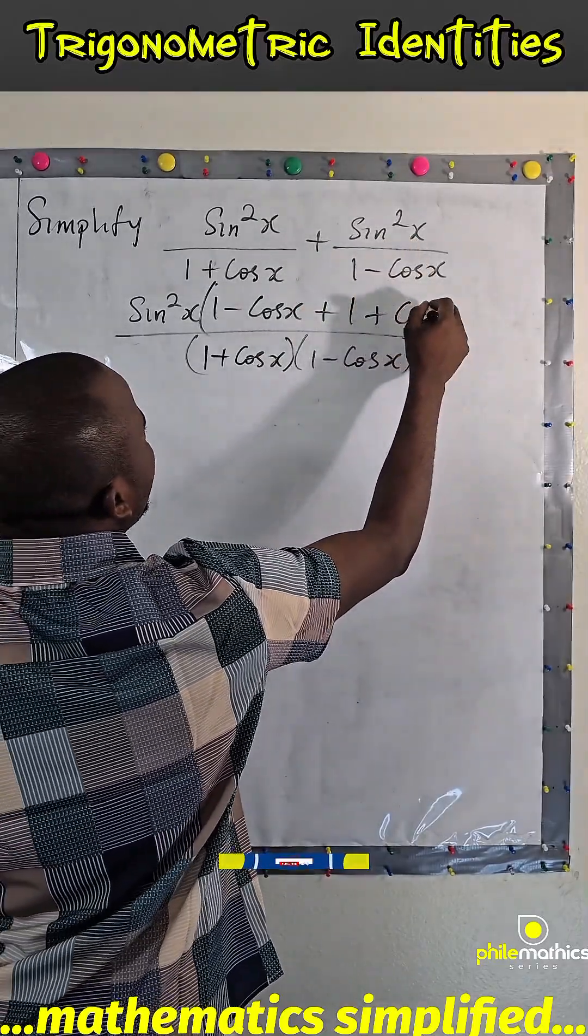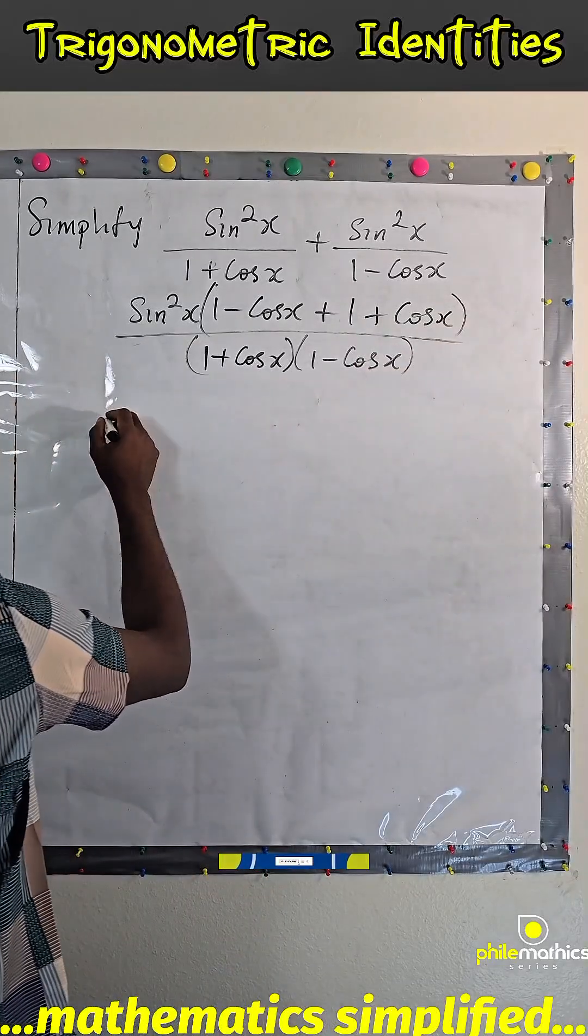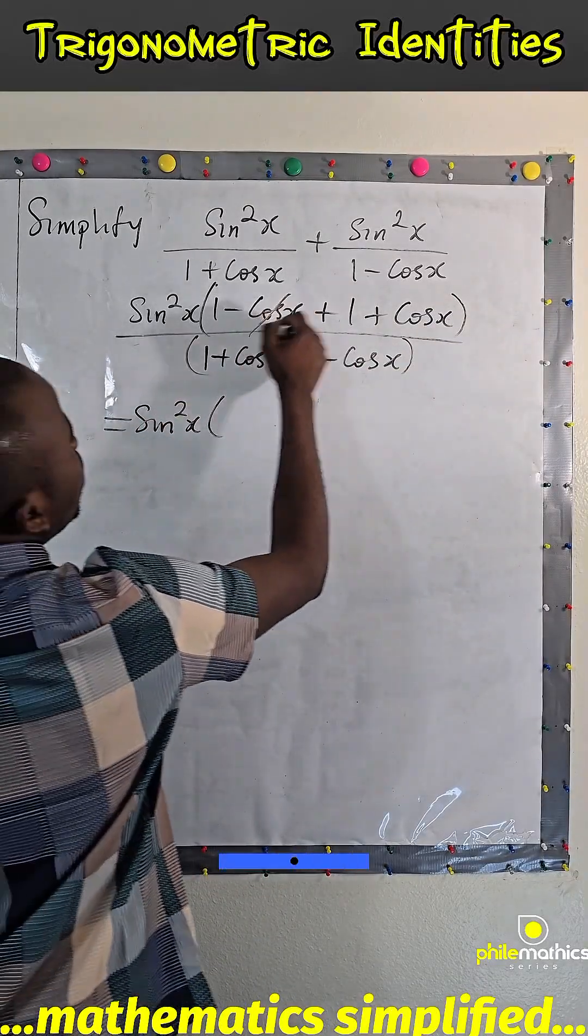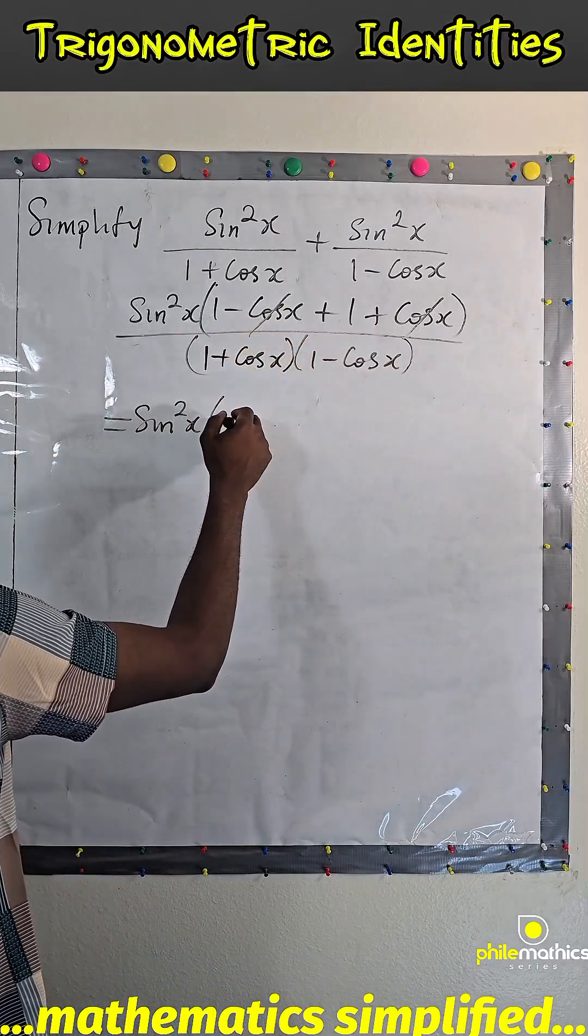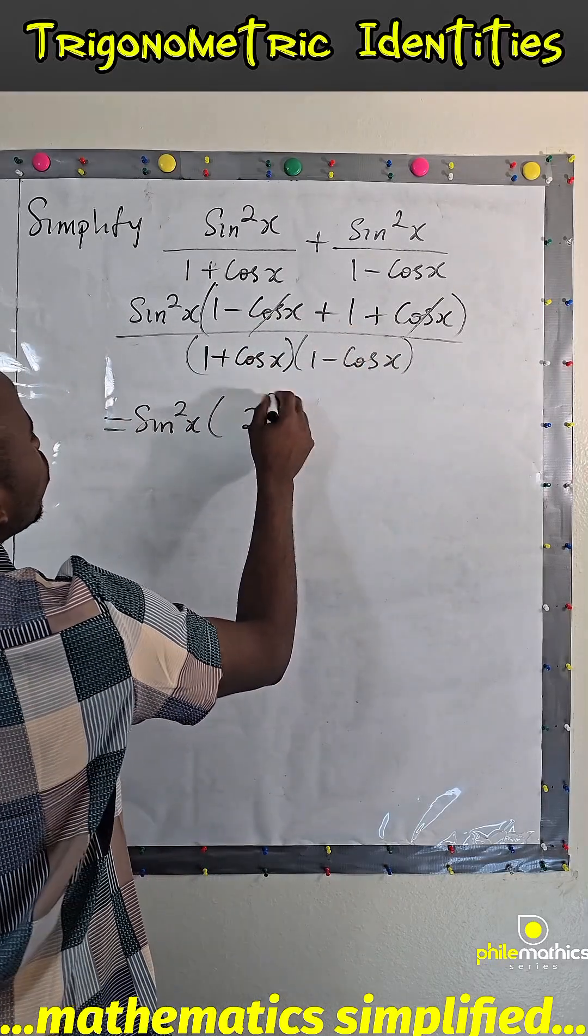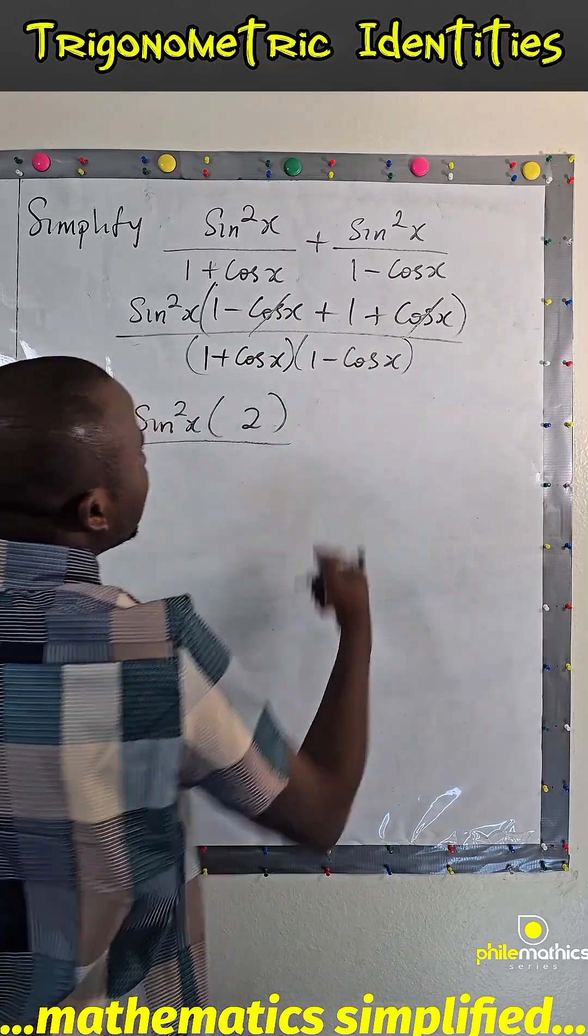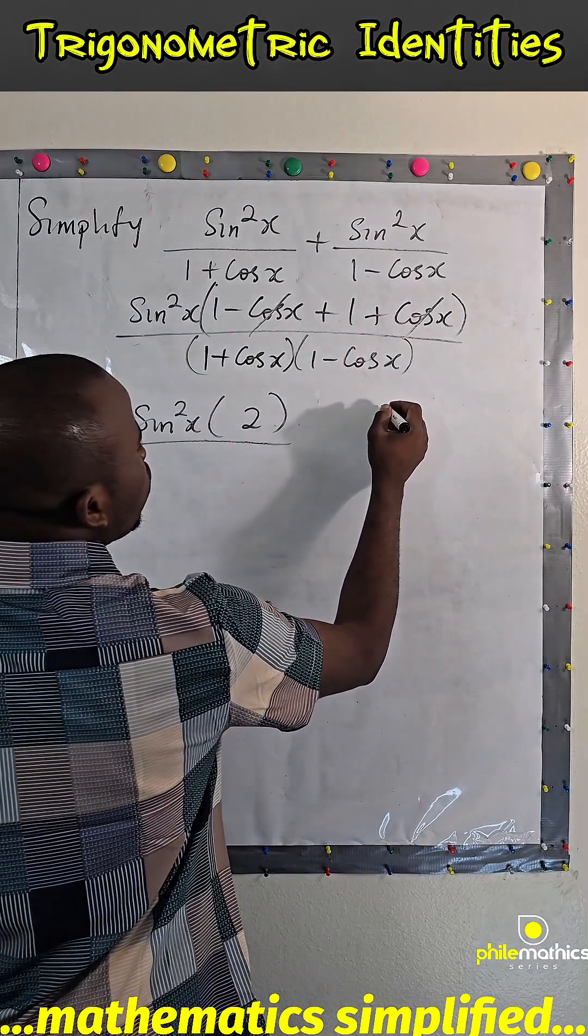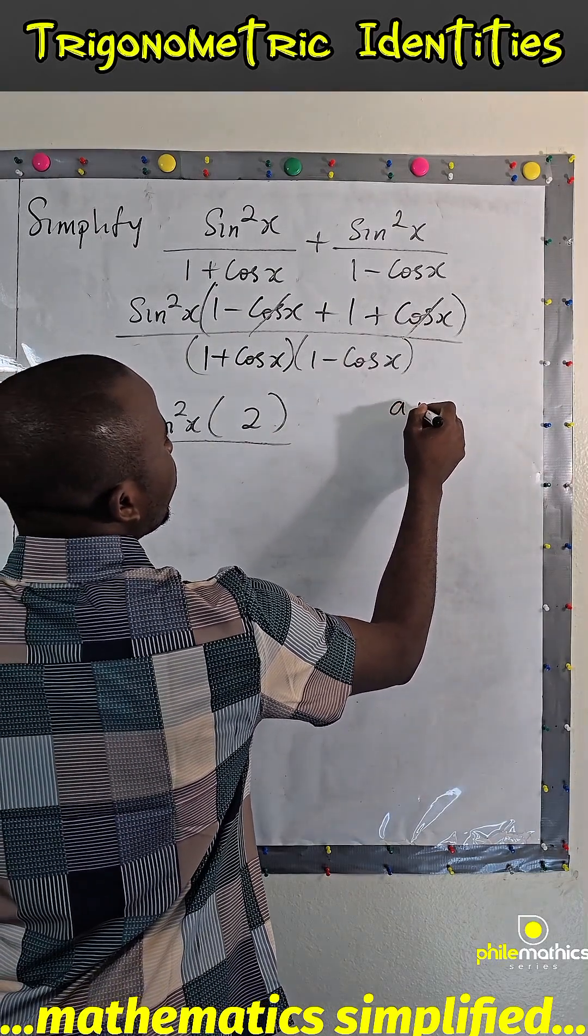So that this would be sine square x. Cos x cancel, 1 plus 1, we have 2. And if we multiply this, this is difference of two squares. Remember, difference of two squares: a plus b, a minus b, is simply a square minus b square.